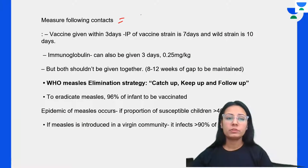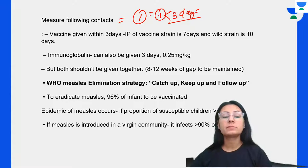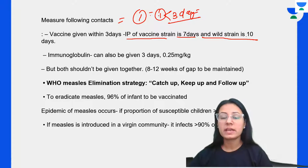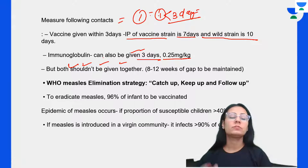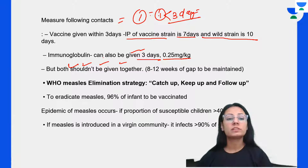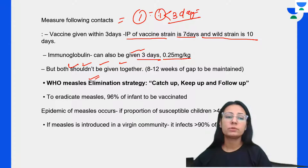Measures following contact with measles: vaccine should be given within 3 days after contact. Incubation period for the vaccine strain is 7 days and for the wild strain is 10 days. Immunoglobulin can also be given, but both vaccine and immunoglobulin should not be given together — a gap must be maintained.